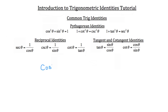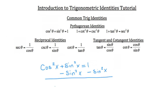For example, you could take the cosine squared theta — and by the way you can also substitute x for theta — so you could say cosine squared x plus sine squared x is equal to one. You could rearrange that by subtracting sine squared x from both sides of the equation. What you'd have on the left is cosine squared x, because the positive sine squared x and the negative sine squared x cancel. So cosine squared x is equal to one minus sine squared x.